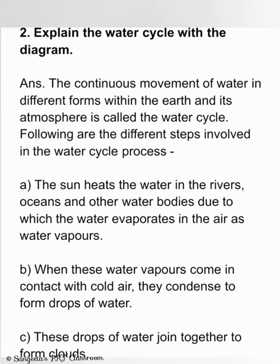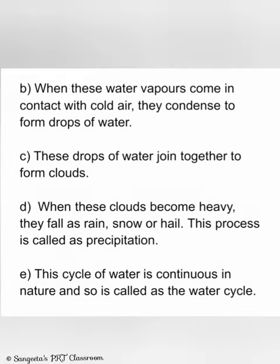Question 2 — Explain the water cycle with a diagram. The continuous movement of water in different forms within the earth and its atmosphere is called the water cycle. The sun heats water in rivers, oceans and other water bodies, causing it to evaporate as water vapour. When water vapour contacts cold air, it condenses to form water drops, which join together to form clouds. When clouds become heavy, they fall as rain, snow or hail — a process called precipitation. This cycle is continuous in nature.